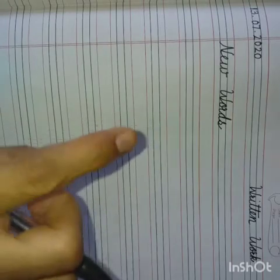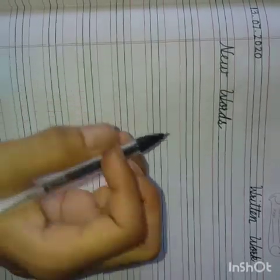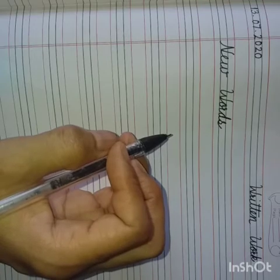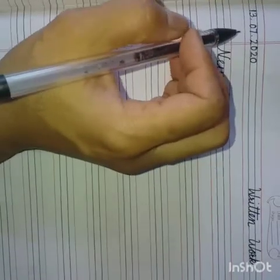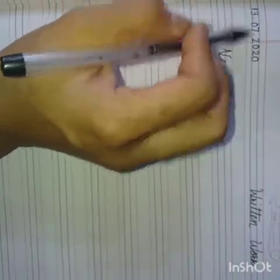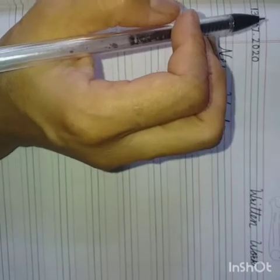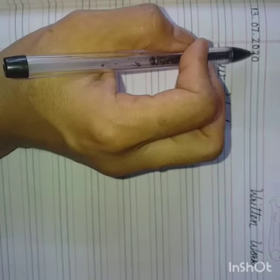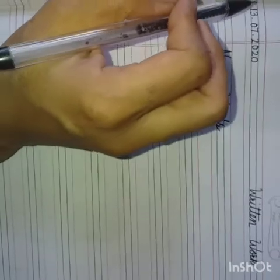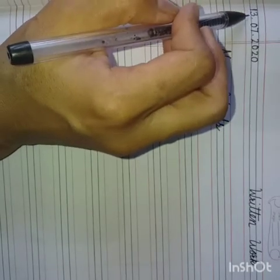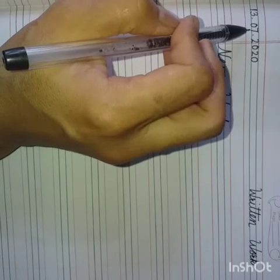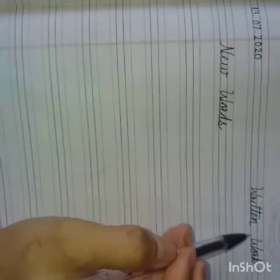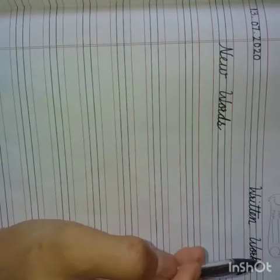Take out your English Notebook, sharpen your pencil and get ready for the written work. Write down date left side. Today is 13th of July 2020. We should write it this way. 13.07.2020 Right side, written work.